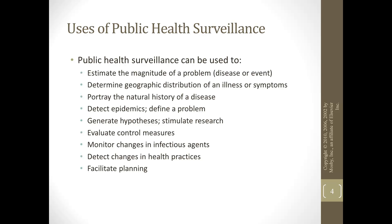Public health surveillance can estimate the magnitude of disease — for example, how many people out of 100,000 get a particular disease. It also involves determining geographic distribution of illness; for instance, multiple sclerosis is more likely in the northern regions of the United States, while skin cancer is more prevalent in the south. Surveillance also looks at the natural history of disease — what happens when a person gets it, with or without treatment, and whether treatments are effective.